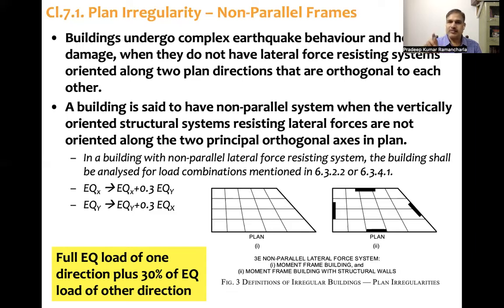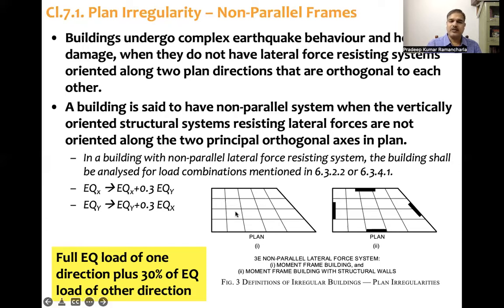If frames are aligned along orthogonal directions, we can directly use ±EQX and ±EQY. But if they are non-orthogonal frames, the earthquake load in the x direction should be replaced with EQX ± 0.3 × EQY, and similarly EQY should include ± 0.3 × EQX. The bottom line is: 30 percent of the earthquake force in the perpendicular direction must be added to the earthquake load in each direction.